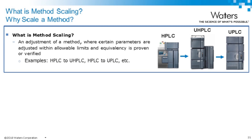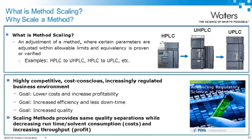These dispersion effects are more pronounced when running isocratic methods. The second characteristic we are going to focus on is dwell volume — the volume between the point of solvent mixing and the head of the LC column. The dwell volume can affect retention time, selectivity, and resolution of a separation. One effect of differences in dwell volume is a shift in the retention time of detected peaks. A method transferred from a UPLC system to an HPLC system using the same column dimensions showed that the HPLC system, having a larger dwell volume, caused peaks to elute later due to additional time for gradient composition changes to reach the column.